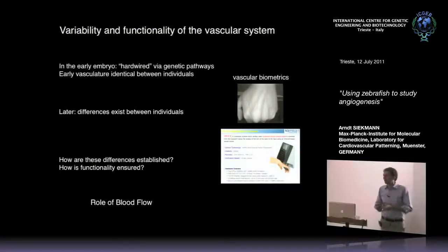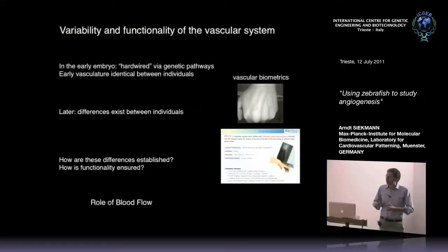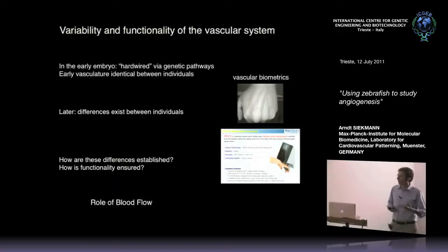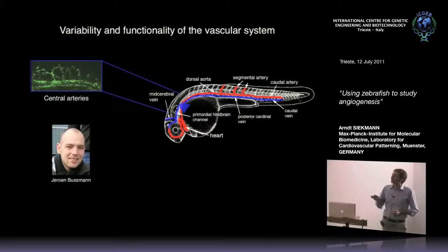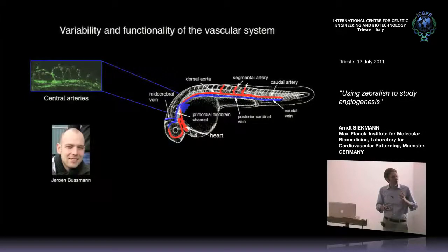We think that in addition to genetic factors, we have this hemodynamic stimulus - the physiological stimulus of blood flow - that controls vascular formation in a functionally proper way. This work was done by postdoc Julian Busmann, who analyzed the first forming brain blood vessels, the so-called central arteries, which are the first vessels where you can detect differences among individual embryos.